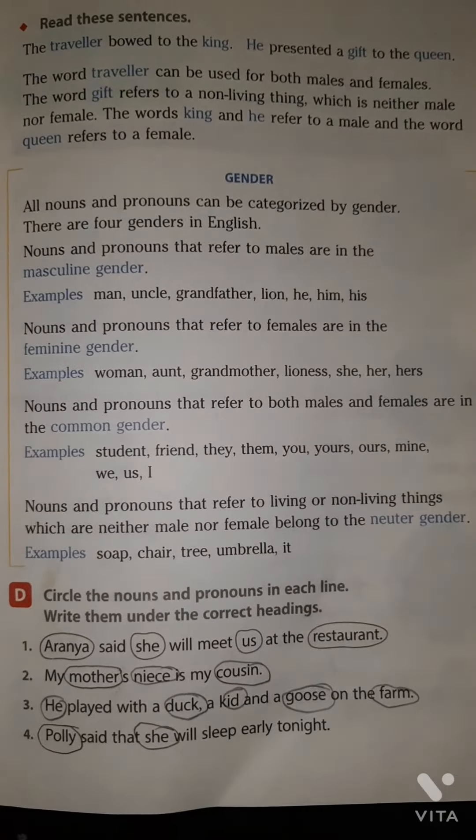Fifth: 'The bull is sleeping. Do not disturb him.' Noun: bull. Pronoun: him. Sixth: 'If the pen is yours.' Noun: pen. Pronoun: yours. Seventh: 'That lady is the writer. She is famous.' Nouns: lady, writer. Pronoun: she. Now categorizing — masculine: he, him (bull). Feminine: Aranya, she; mother; Polly, she; lady, she. Common: cousin, kid. Neuter: restaurant, farm, pen.